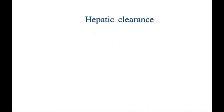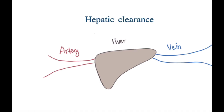Let's start with hepatic metabolism and how it happens. Looking at this figure of the liver, we can see that the arteries bring the blood with the drugs in it into the liver, and then it leaves via a vein. The liver is like a machine that takes the blood, clears some of the drugs from it, and leaves the remaining drugs in the blood that gets to other organs.